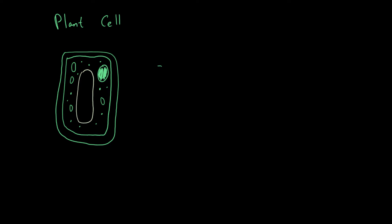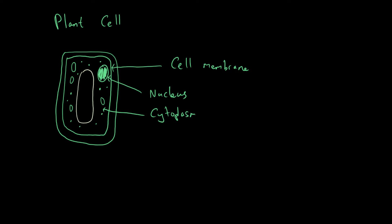Let's label the things we've already seen. The inner layer is the cell membrane, just as before. The shaded blob is the nucleus. The surrounding space - which is actually a thick gel-like liquid - is the cytoplasm. The small dots are the ribosomes where protein synthesis happens, and the larger circles are the mitochondria where cellular respiration occurs.